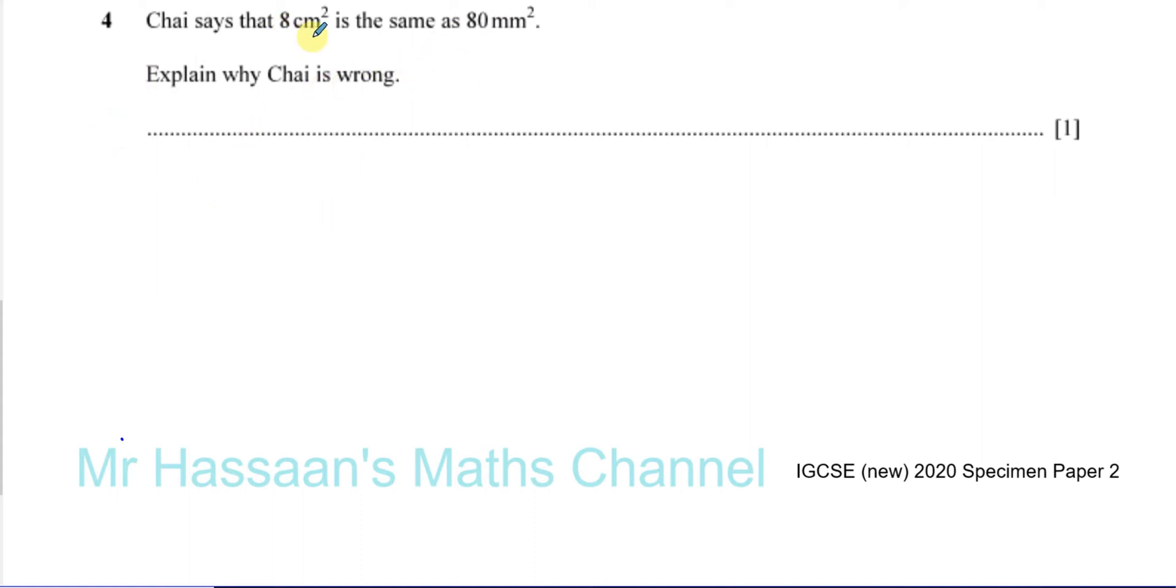Well, the reason why Chai is wrong is that these are squared units, they're not normal units. So we can say that 1 cm² is the same as 10 mm². So that means 1 cm² is the same as 100 mm².